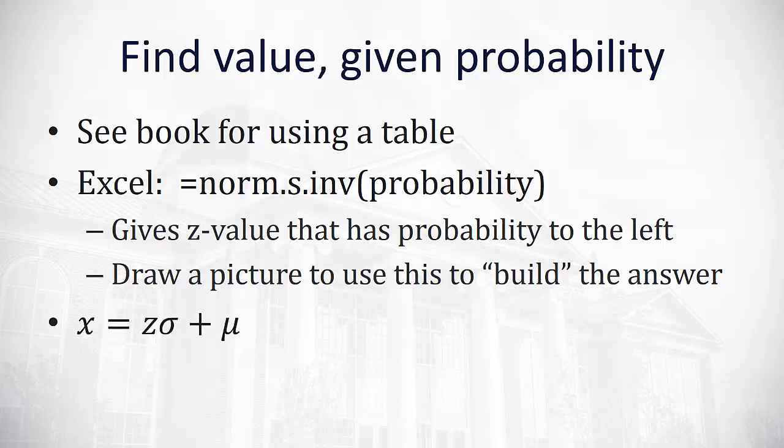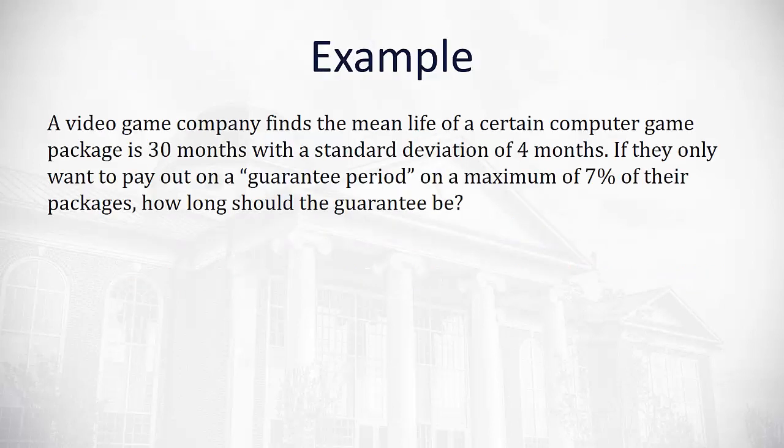Once we have our z value, we can quickly convert that z value into an x value, which has context in our situation, by using our formula that the x value is the number of standard deviations times the standard deviation plus the mean.